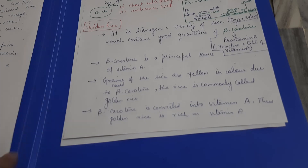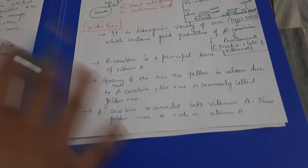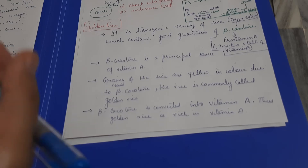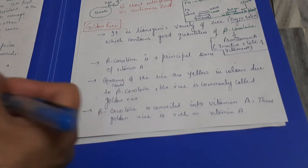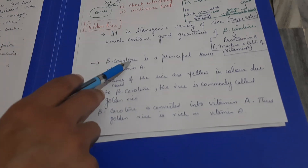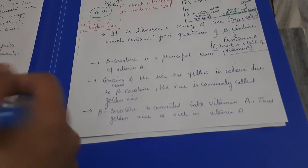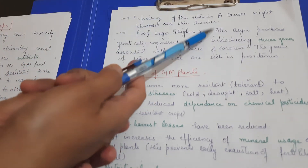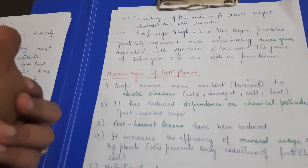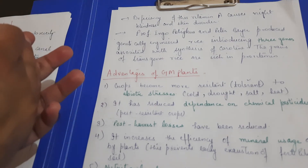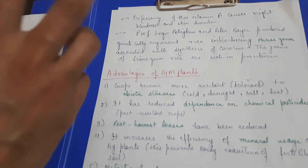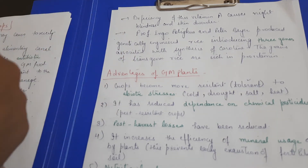Beta carotene is quickly converted to Vitamin A in the body, so Golden Rice is effectively rich in Vitamin A. Golden Rice is the transgenic variety of rice that contains a good quantity of beta carotene. Three genes were introduced into the rice plant to develop Golden Rice, resulting in a good quantity of beta carotene and making the rice rich in Vitamin A.